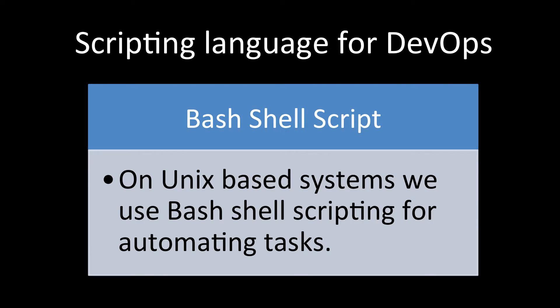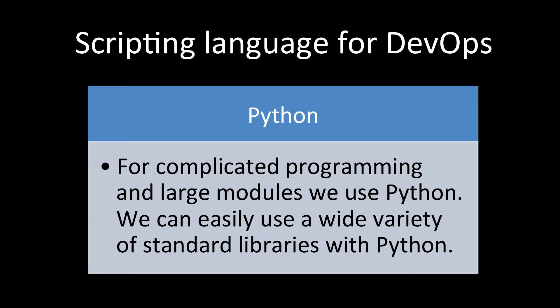On Unix-based systems, we use Bash shell scripts. These are used for automating tasks — you can start or stop a server, clone repositories, copy files, and perform other custom operations. Bash shell scripts provide very good support, and behind the scenes you can run any command with a shell script.